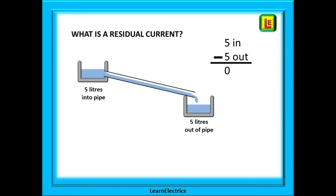So what is a residual current? It is the leftover or missing current. Electrical theory says that what flows into a circuit must flow out, and we can show this graphically with two buckets and a piece of pipe. If five litres of water enters the pipe from the top bucket then we would expect five litres to enter the lower bucket. Five litres in minus five litres out gives a result of zero — there is no water missing.